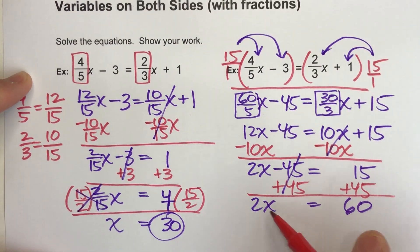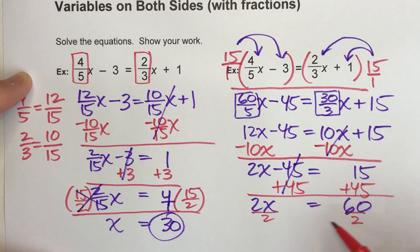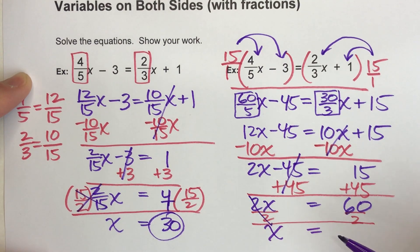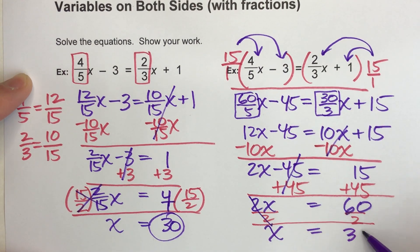And then for my last step, divide both sides by 2. And the 2's undo each other. Here, x equals 60 divided by 2 is 30.